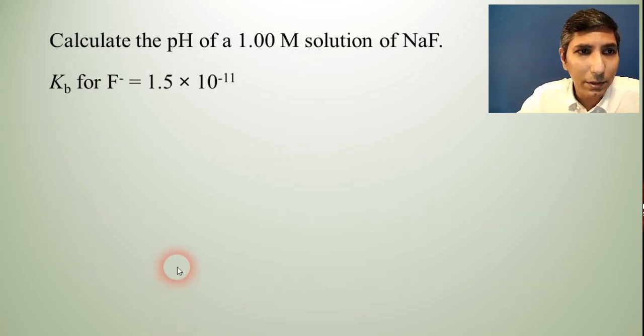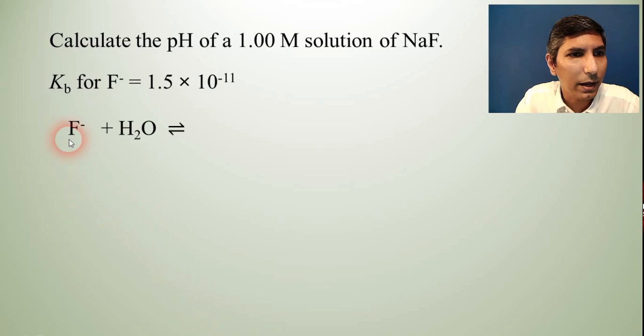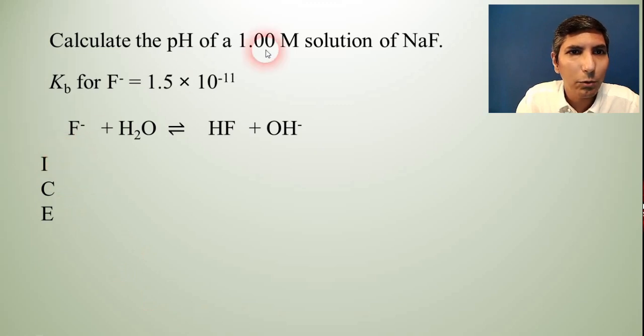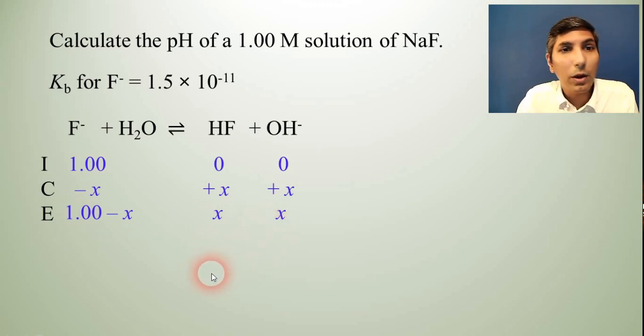So let's write the equation. Fluoride. And of course, it's added to water. The products are going to be the conjugate acid of this base along with hydroxide. So we have HF and hydroxide. So now we are ready to set up our ICE box. So we have this. Our initial concentration of fluoride will be one molar. The products are going to be essentially zero. And so now in our change row, we notice that we're not given anything else, any more information other than the dissociation constants here. So it's minus X and then plus X on the product side. So our equilibrium values will be one minus X and then X and X.